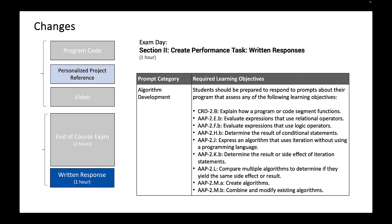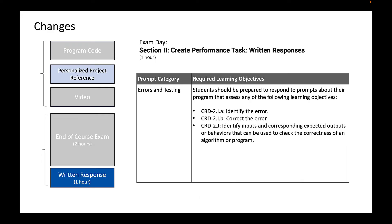Now this is what I meant by loosening up the requirements — do you see the big difference here? And the third category is kind of new: errors and testing. Learning objectives include: identify the error; correct the error; identify inputs and corresponding expected outputs or behaviors that can be used to check the correctness of an algorithm or program.